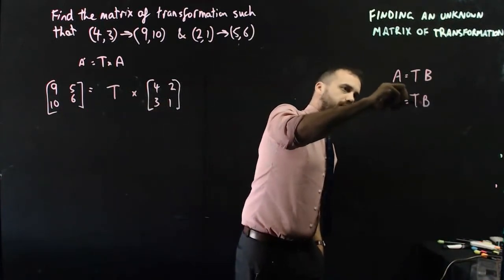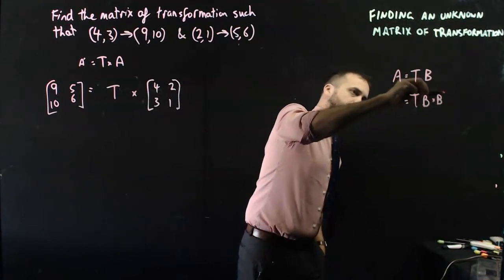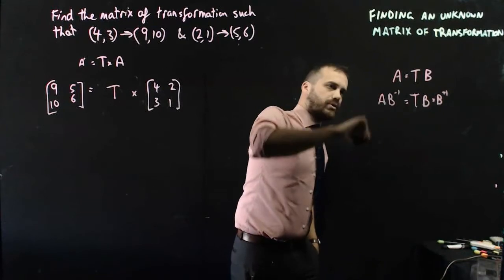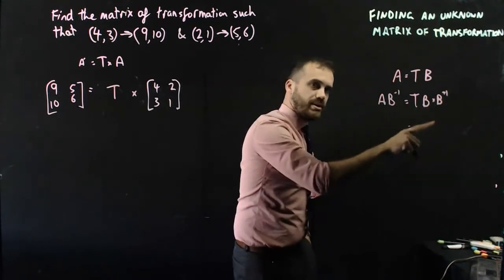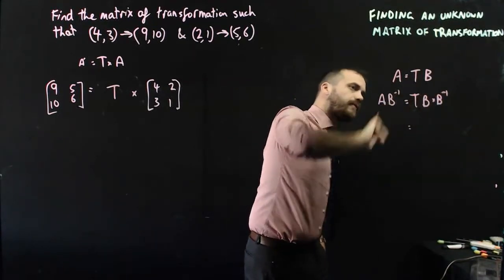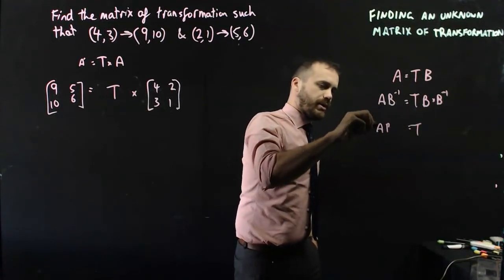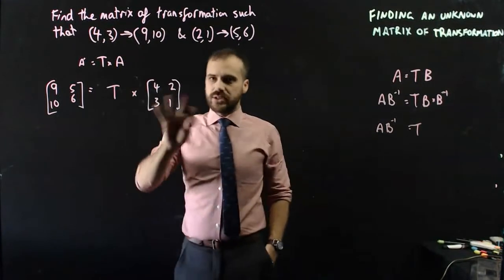We can write T times B to the negative 1. A times B to the negative 1. B times B to the negative 1, that should equal 1. So, that gives us T equals A times B to the negative 1. That's what we need here now.